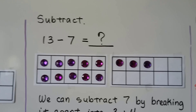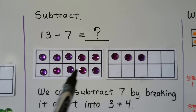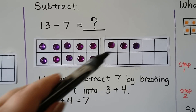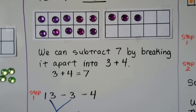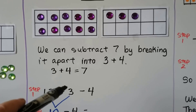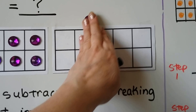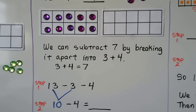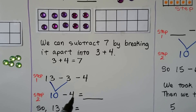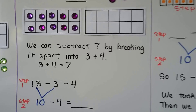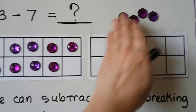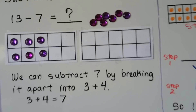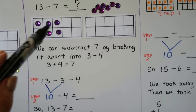Let's subtract 13 minus 7. We have a full 10 frame, so that's 10, 11, 12, 13. We can subtract 7 by breaking it apart into a 3 and a 4. 3 plus 4 equals 7. The first step is we have 13 and we take 3 away. Now we have 10. 13 minus 3 is equal to 10. Now we take away 4 more: 1, 2, 3, 4.